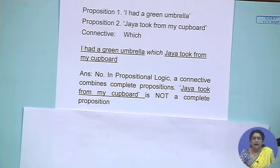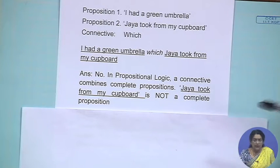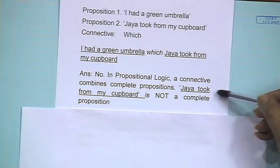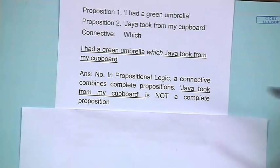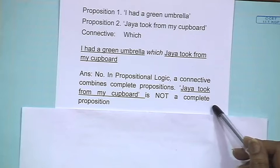First of all, understand that in propositional logic a connective is supposed to combine complete, standalone propositions. If you look into the sentence itself, you will find that one of the components is not even a complete proposition. 'Jaya took from my cupboard' — Jaya took from my cupboard is not even a complete proposition. So the way a connective works in propositional logic is: a complete proposition combined with another complete proposition. That is one reason why 'which' here is not a connective.